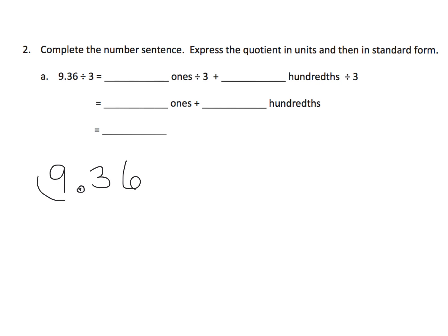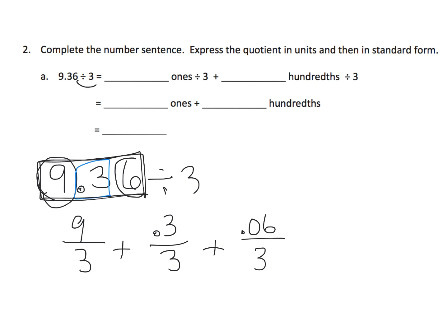Basically what they're doing is they're saying, let's take this 9 here and divide by 3. So that's going to be 9 divided by 3, plus we've got this 3 tenths divided by 3, plus we've got right here our 6 hundredths divided by 3. That's really what it's doing, taking this one big problem and dividing it by 3 and breaking it up into three partial quotients.